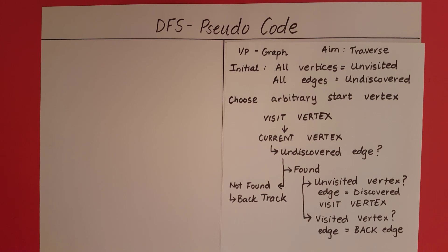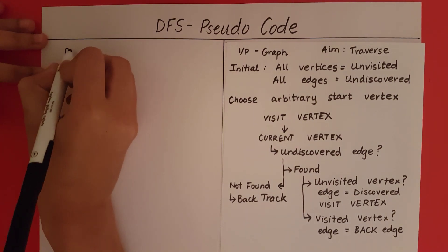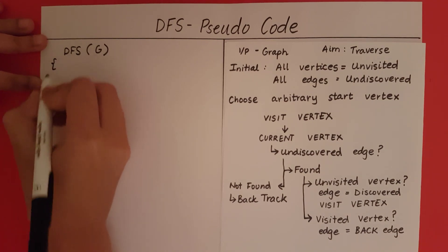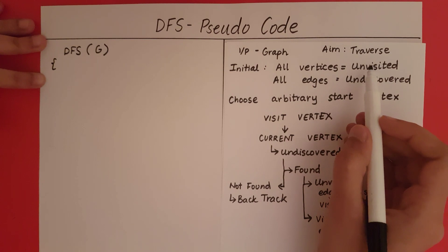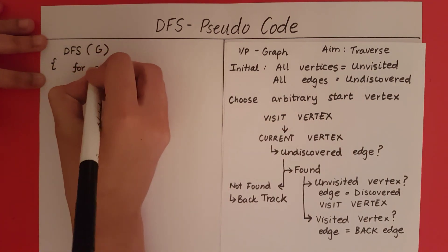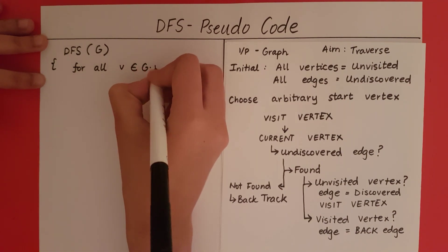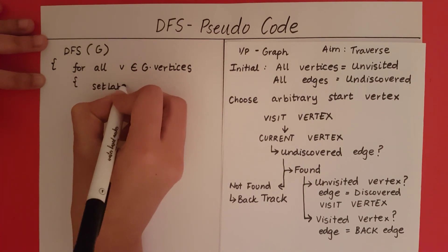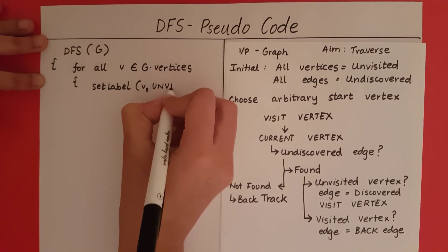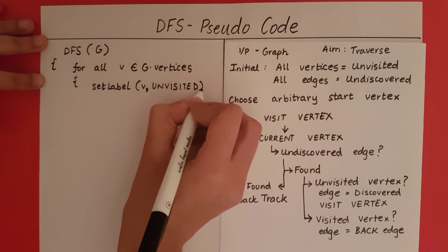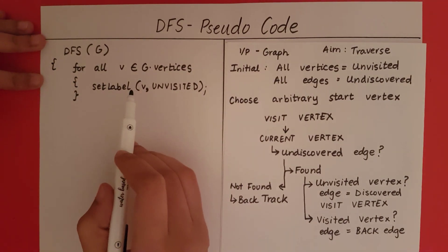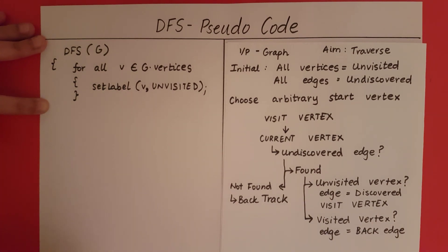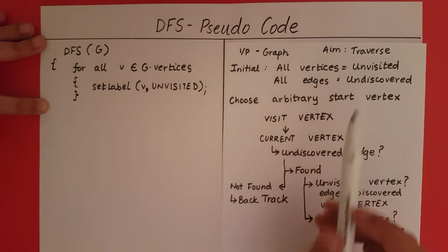Now let's start to write the pseudo code. The algorithm will be called DFS and takes a graph G as input. Initially we need to set all the vertices as unvisited. So for all V belonging to G.vertices, we set the label of that vertex to unvisited. SetLabel is a function you can write outside the DFS algorithm. So now all vertices are set to unvisited. The next step is to set all the edges to undiscovered.